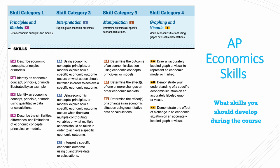The third skill category would be manipulation, which is to determine outcomes of specific economic situations. You determine the outcome of the situation using economic models or concepts, and you would determine the effects of one or more changes of economic markets, and you would also determine it using quantitative data or calculations.